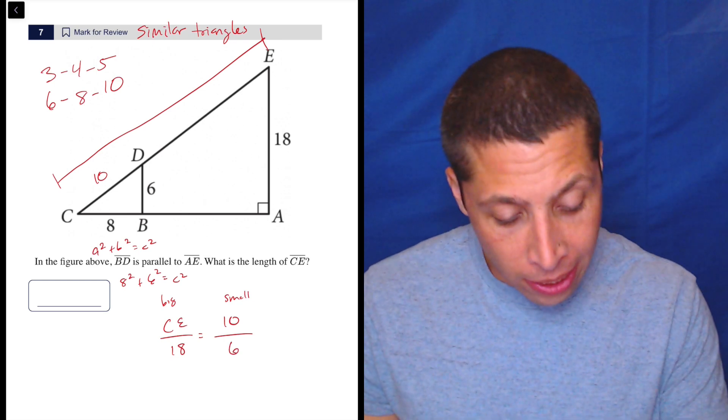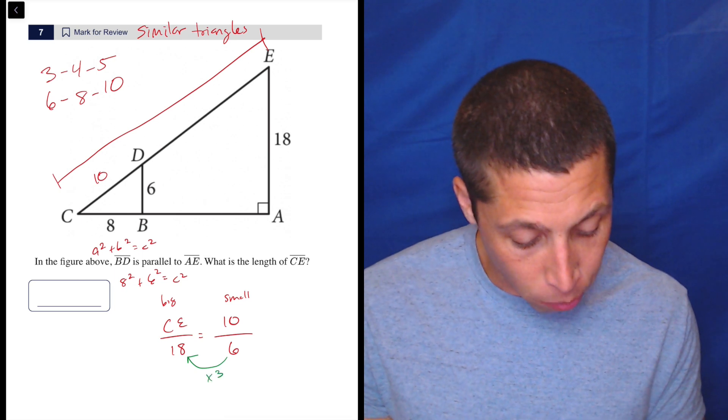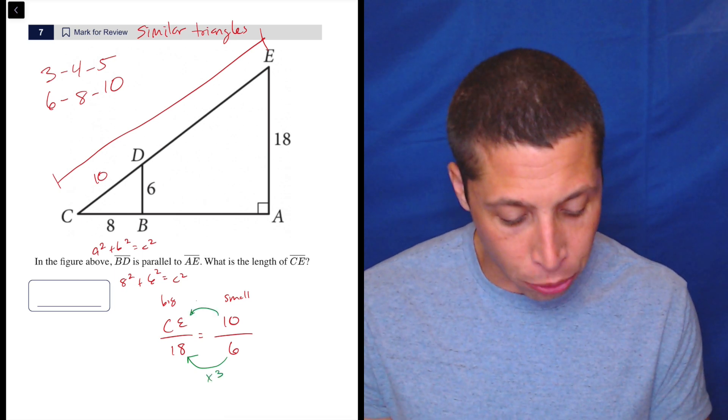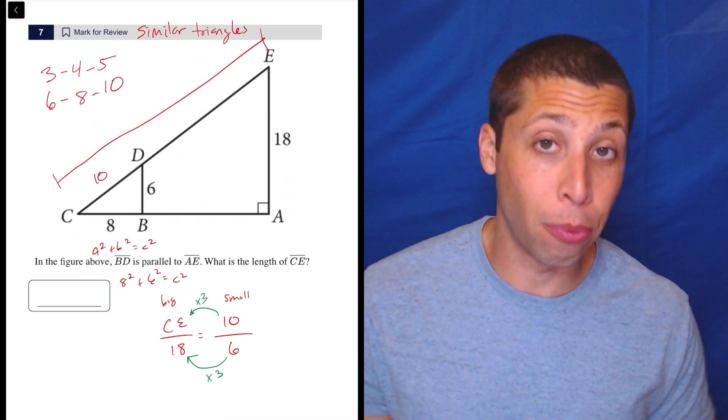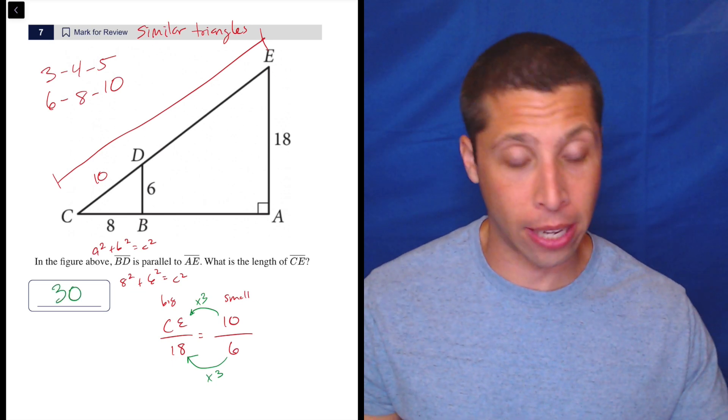Now, we can cross multiply and divide. Some of you are just going to see that how do we go from 6 to 18? We multiply by 3. How do we go from 10 to CE? We're also going to multiply by 3. That is just how these things work. So 10 times 3 is 30. And that is our answer.